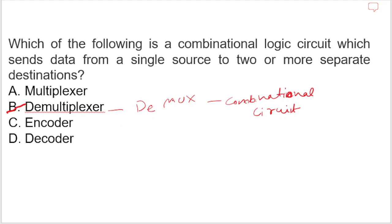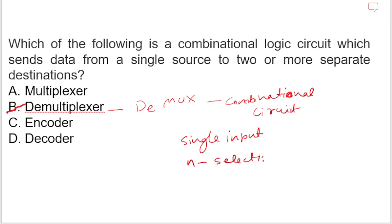Demux has a single input, n selection lines, and a maximum of 2 to the power n outputs.